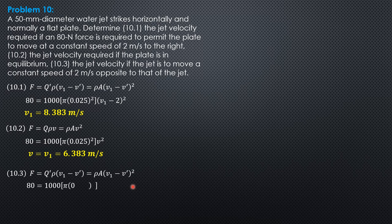So, 80 equals 1000 times 0.025 square quantity V1 minus negative 2 quantity square. So, 80 divided by quantity 1000 times 0.025 square, extract the square root, then minus 2. So, V equals V1 equals 4.383 meters per second.